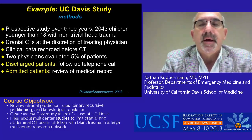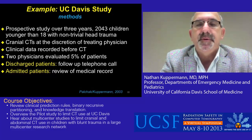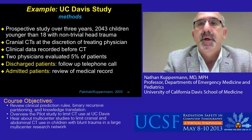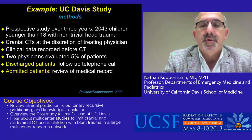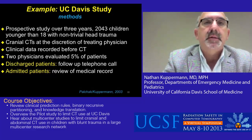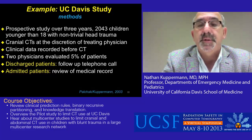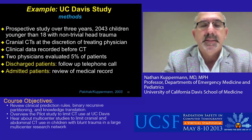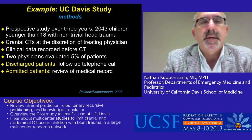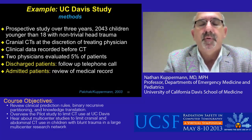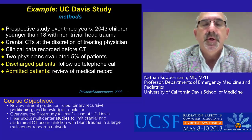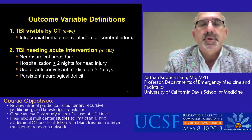I want to give you an example of a decision rule we performed at UC Davis using binary recursive partitioning. This was a prospective study over three years in which we studied more than 2,000 children younger than 18 with non-trivial head trauma. Cranial CT scans were obtained at the discretion of the treating physician, and clinical data were recorded on a case report form before CT scans were obtained. Two physicians evaluated 5% of patients to assess inter-observer reliability — an important component of creating a clinical decision rule. Discharged patients were followed up by telephone, and admitted patients had their charts reviewed for outcomes.